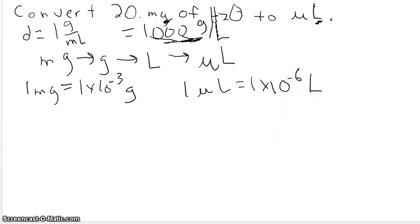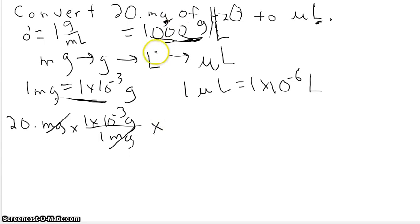Now we've got all the conversion factors we need to solve this problem. We'll start with 20 milligrams, use our first conversion factor: one times ten to the minus three grams for one milligram. Use your units all the way through the problem. Don't get lazy and start skipping things. So we've got grams. Once you're in grams, now we can use our density.